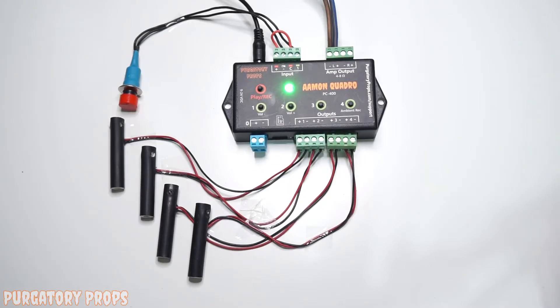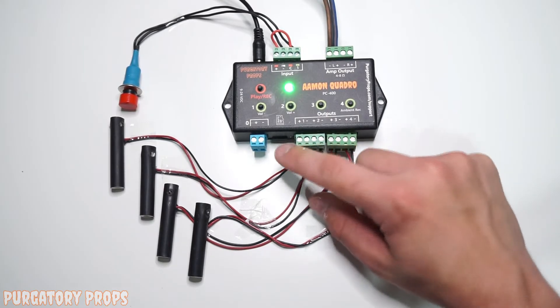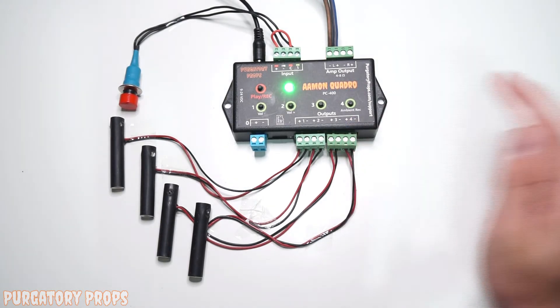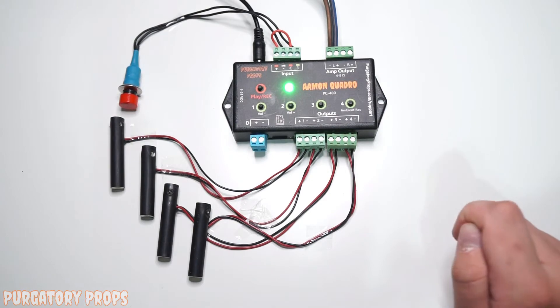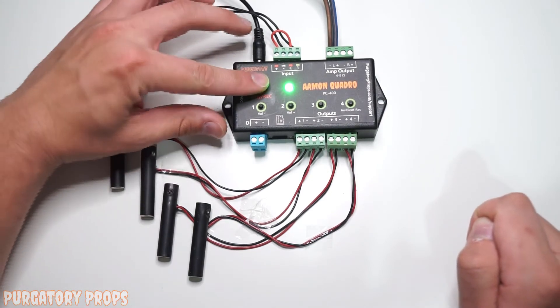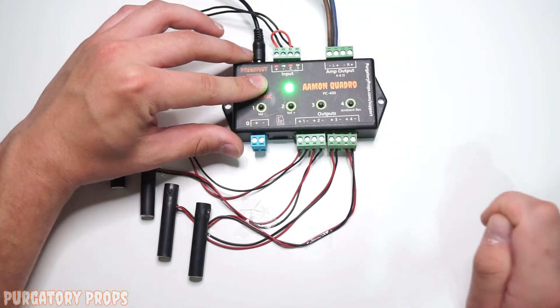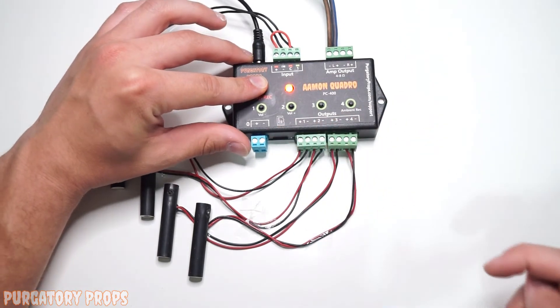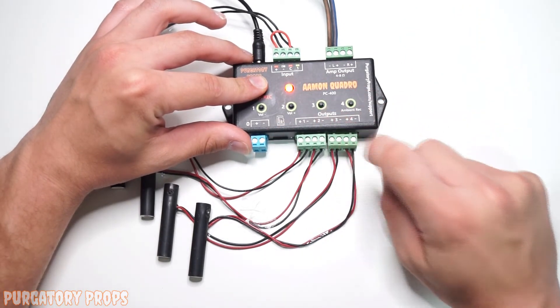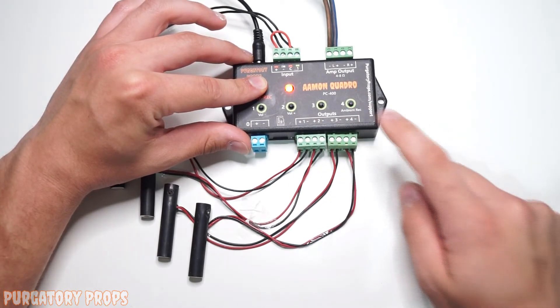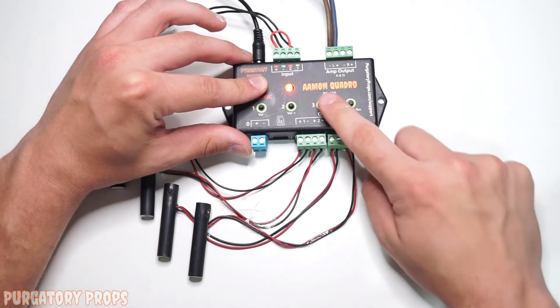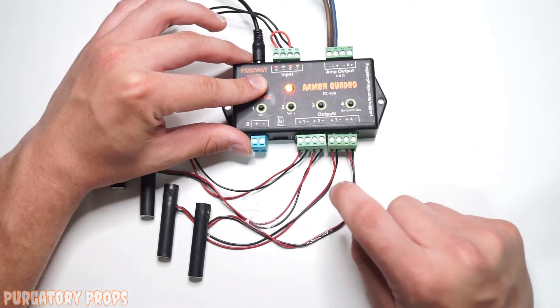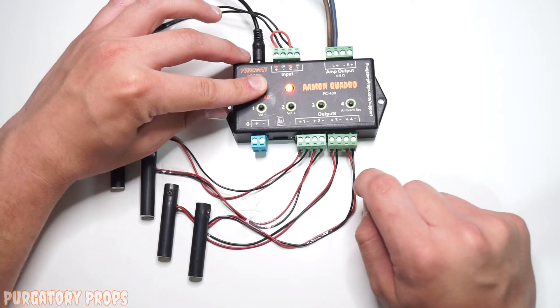So if you have a more complicated prop or scene, and you want to record each channel one at a time, or if you want to erase the recording on a channel, you can do that by layering them. So if you hold play record until it turns red, right now it will default to recording all the channels. But if you push one of these buttons, the LED will flash, and it will no longer record that channel. So if I press 3 and 4, I will no longer be recording outputs 3 and 4.